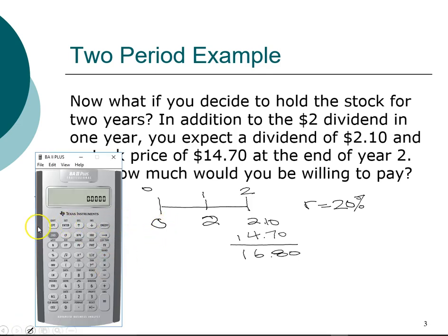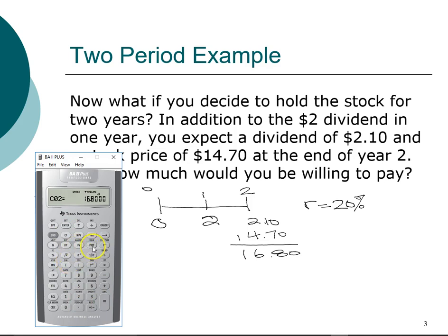To find the present value of multiple cash flows, we use the cash flow register and clear all work first. There is no cash flow in year zero. Cash flow one in year one is two dollars. Cash flow in year two is sixteen dollars and eighty cents — entering the sum of dividend and price together. We then go to NPV, enter the interest rate of twenty percent, press compute, and get thirteen dollars and thirty-three cents.